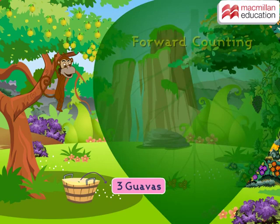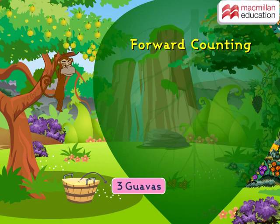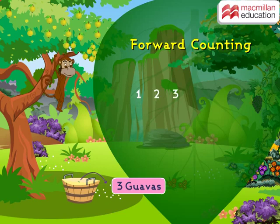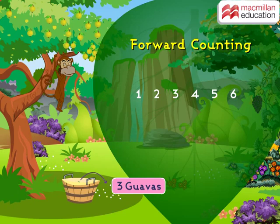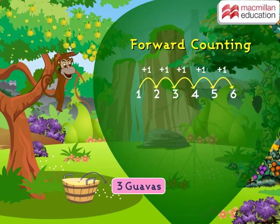We will help Kiki with the concept of forward counting. You must be wondering what forward counting is. The order in which we count numbers starting from one, two, three, four, five, six and so on is called forward counting. Notice that you are actually adding one to the previous number as we move one step forward.